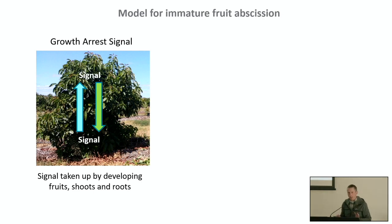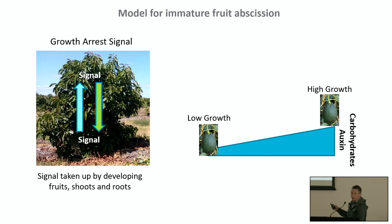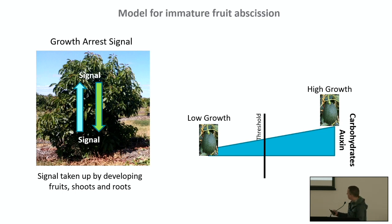We propose that in avocados, a growth arrest signal is generated either in the shoot or fruit and is mobile — moving through xylem or phloem — and is taken up by developing fruits, shoots, and roots. Among the fruit population on a tree, some fruits have a relatively lower growth potential and some a higher potential, reflecting their auxin and carbohydrate levels. The ability of this signal to cause abscission is determined by a threshold: fruits with auxin and carbohydrate concentrations below that threshold undergo abscission, while those above it persist.